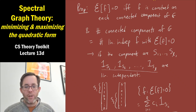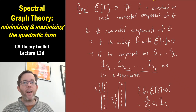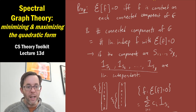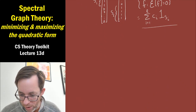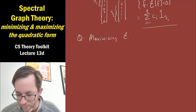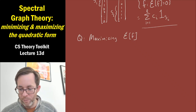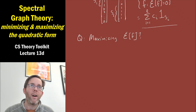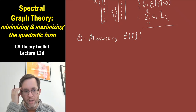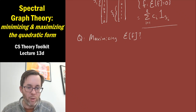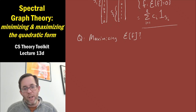That covers minimizing the quadratic form: the minimum value is zero, and we can say interesting things about the functions that achieve it. Now let's talk about maximizing the quadratic form. There's an obvious problem: if you multiply f by 2, the quadratic form goes up by a factor of 4 due to the scaling property — the quadratic form of cf equals c squared times the quadratic form of f. So you can make it as large as you want by scaling.